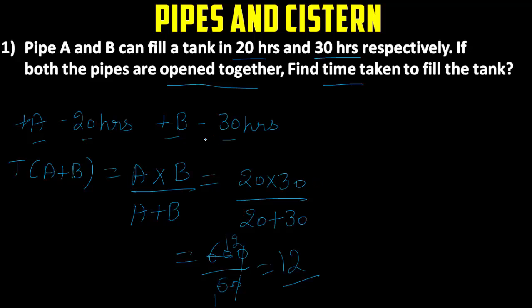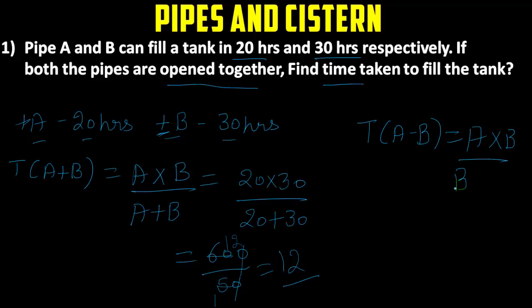In this question both pipes are filling the tank, but the examiner can also ask a case where one pipe is filling the tank and the other is emptying the tank. In that case we use a negative sign, and the formula becomes: time taken = A×B divided by B−A.